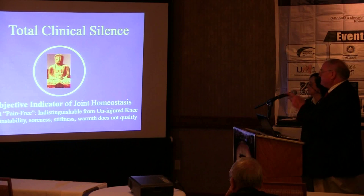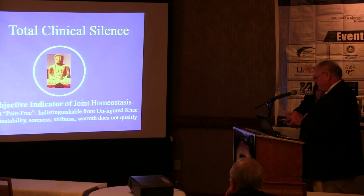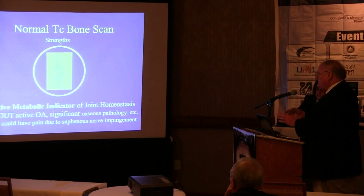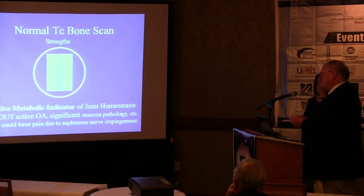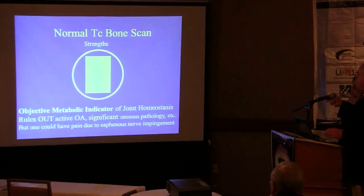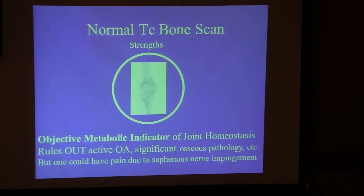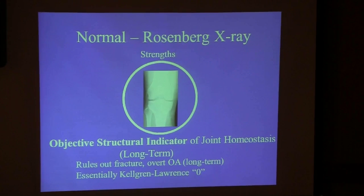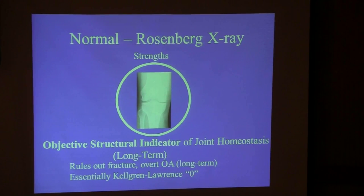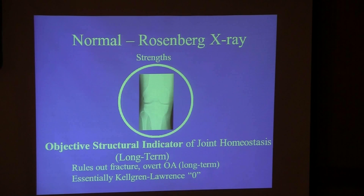Number one: total clinical silence — the subjective indicator of a joint in full homeostasis. Not just pain-free, but indistinguishable from an uninjured knee, with no instability, soreness, or stiffness. Number two: normal bone scan — the objective metabolic indicator ruling out active OA, though by itself a saphenous nerve impingement could still cause pain. Number three: a normal Rosenberg x-ray, graded with the Kellgren-Lawrence scale — the objective structural indicator of long-term joint homeostasis.